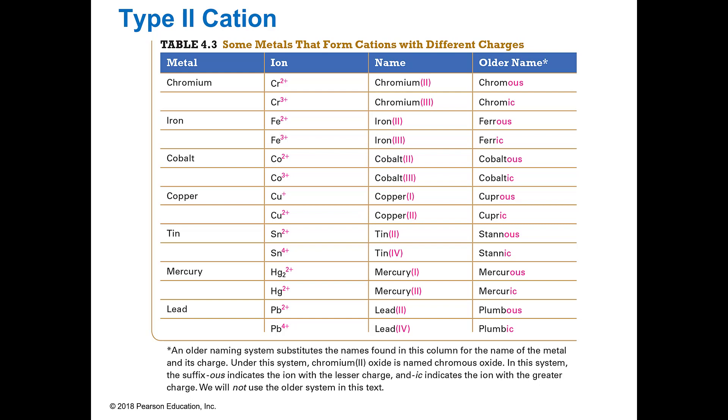So I still use the -ide in the nonmetal. And so I've got some of these metals that are the culprits in this that do have multiple charges or they're multivalent like chromium, like iron, cobalt, copper, tin, mercury, lead, and there are some other, these are the main ones that we see.